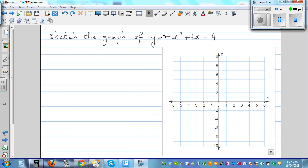Sketch the graph of y equals negative x squared plus 6x minus 4. Whenever you have a negative in front of x squared, you should understand the graph is going to be upside down. The graph is going to look umbrella shaped. This should be the shape of the graph.